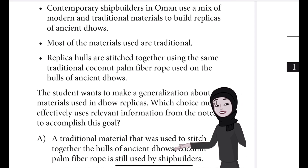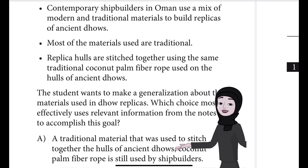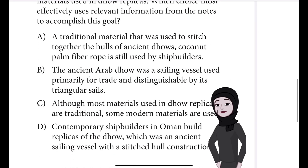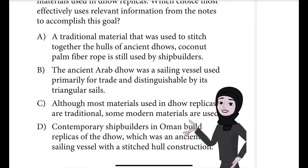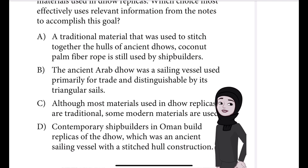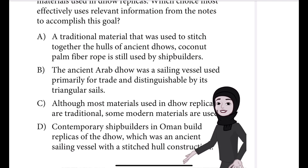The student wants to make a generalization about the materials used in Dhaw replicas. Which choice most effectively uses the relevant information from the notes to accomplish this goal? Choice A: Is it a traditional material that was used to stitch together the hulls of ancient Dhaws — coconut palm fibre rope — is still used by shipbuilders? Choice B: The ancient Arab Dhaw was a sailing vessel used primarily for trade and distinguishable by its triangular sails.